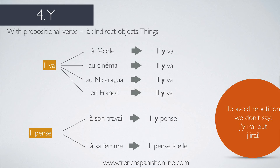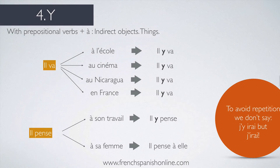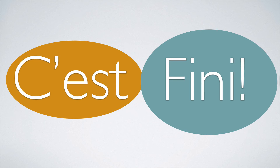To avoid repetition, we don't say j'y irai but just j'irai — because you'd have the sound I twice. It works with the future tense of the verb to go in French: il ira, not il y ira, which is too heavy. So we've seen the four pronouns in this lesson. To practice, go to my website for exercises. C'est fini — au revoir et bon français! We'll see you soon!